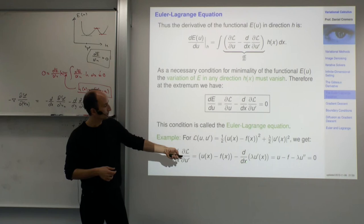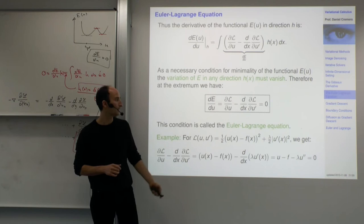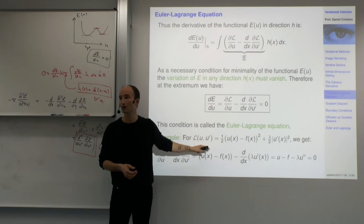Assuming lambda is constant, the x derivative goes right on u prime, and what we get is u minus f minus lambda u double prime equals zero. This is a differential equation, and the function u that solves it is the minimizer of our functional.